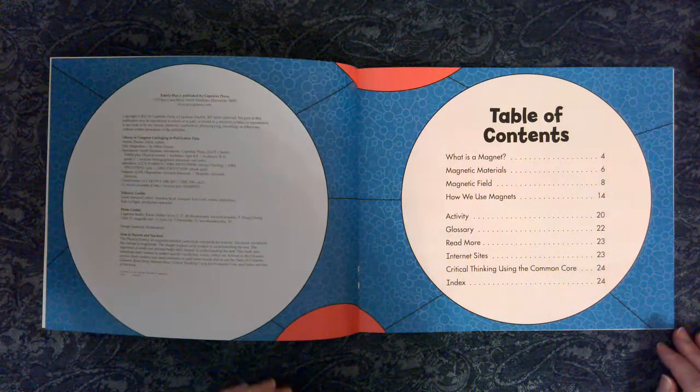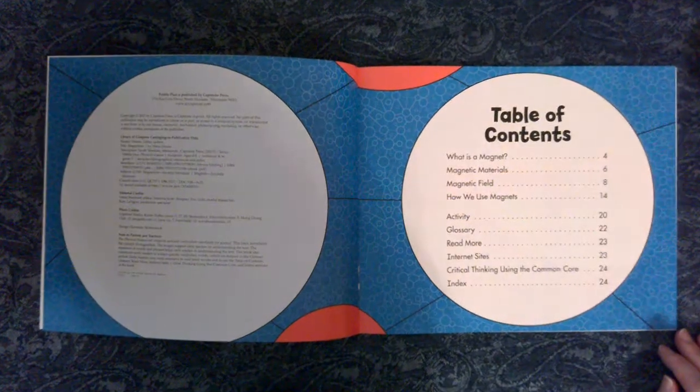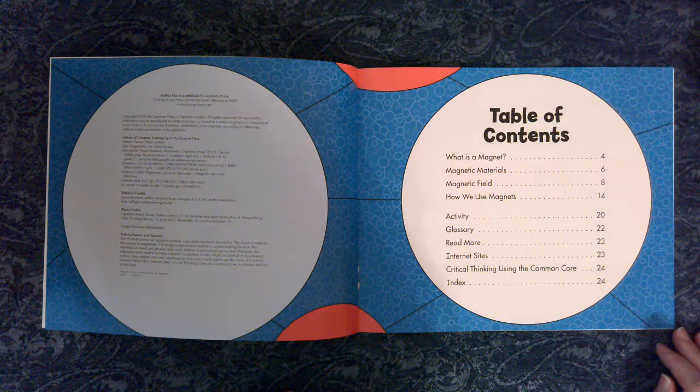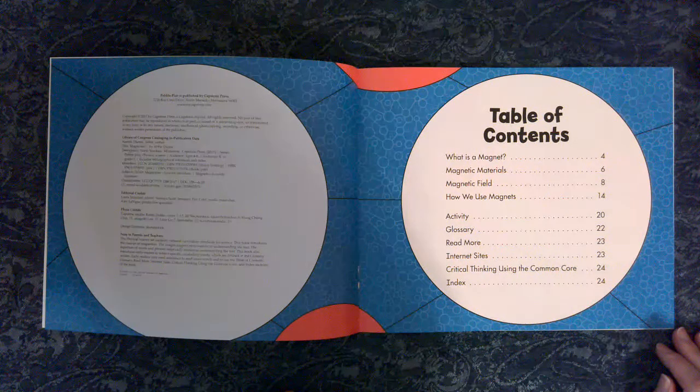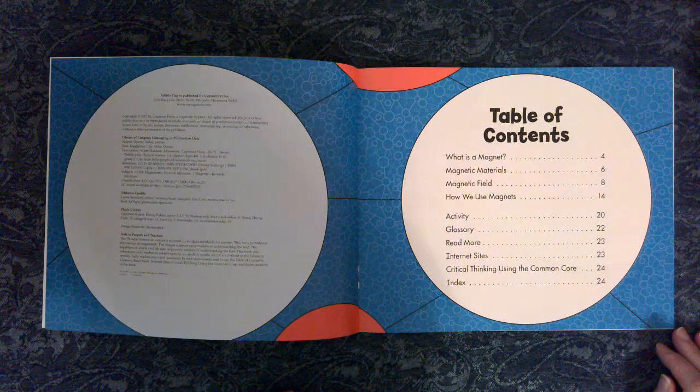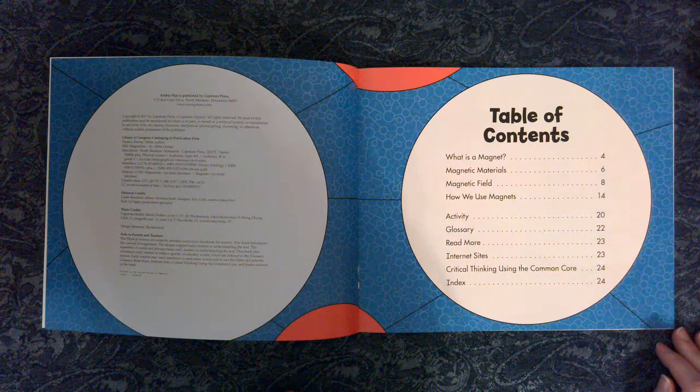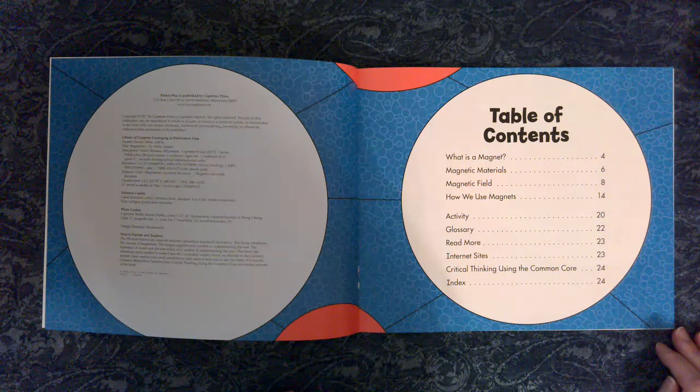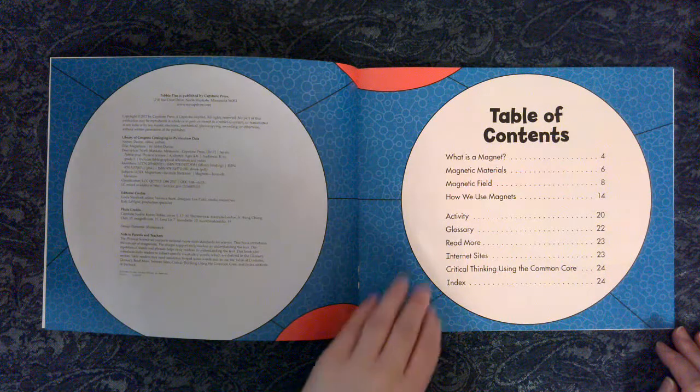Table of Contents: What is a magnet? Magnetic materials, magnetic field, how we use magnets, activity, glossary, read more, internet sites, critical thinking using the common core, index.